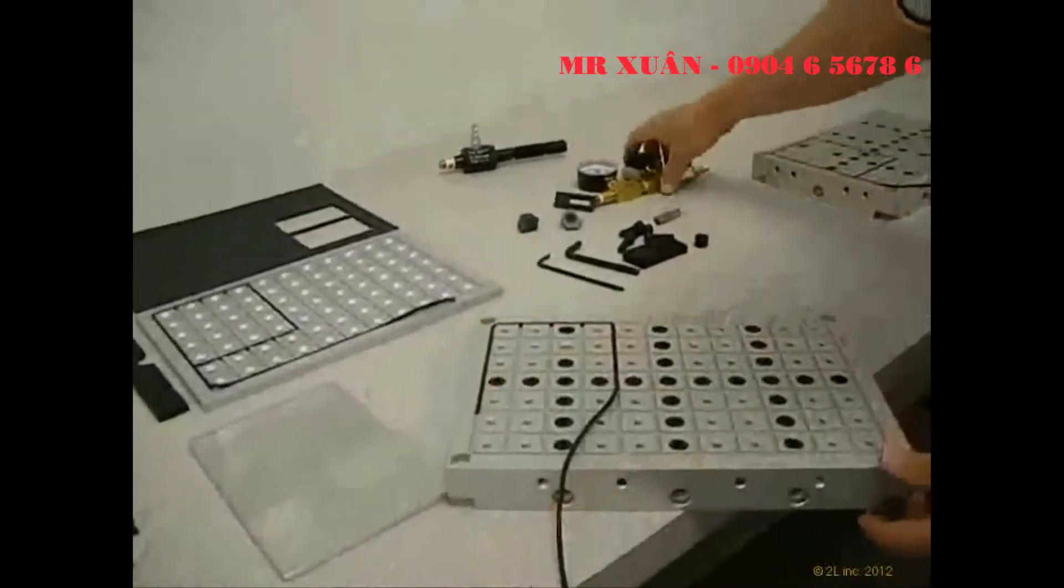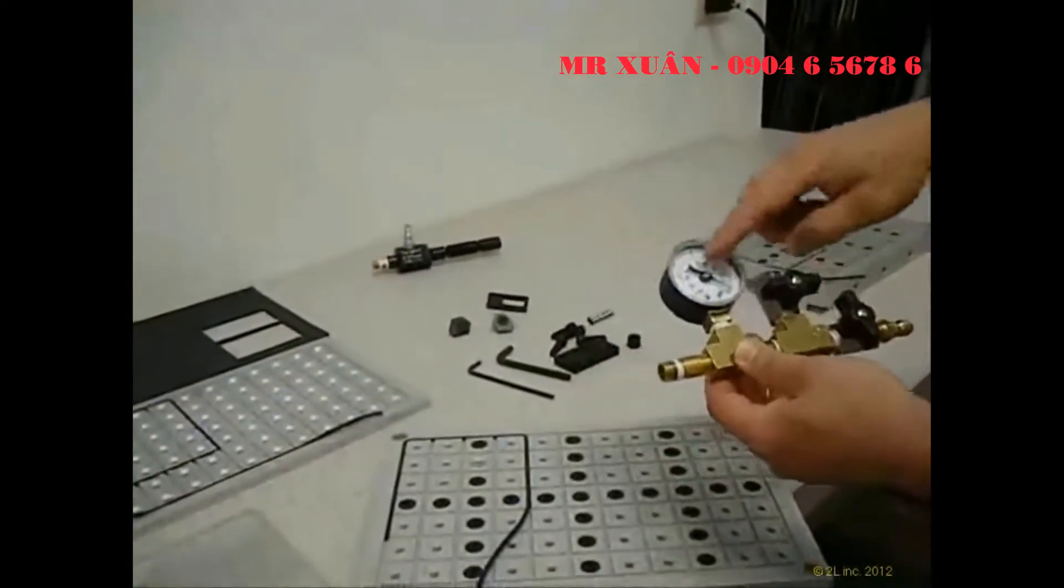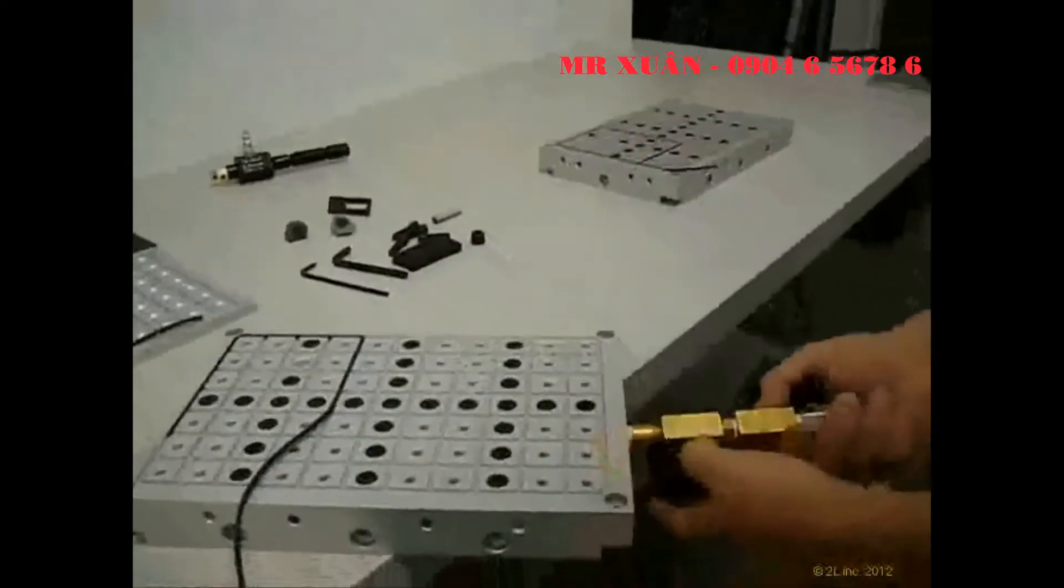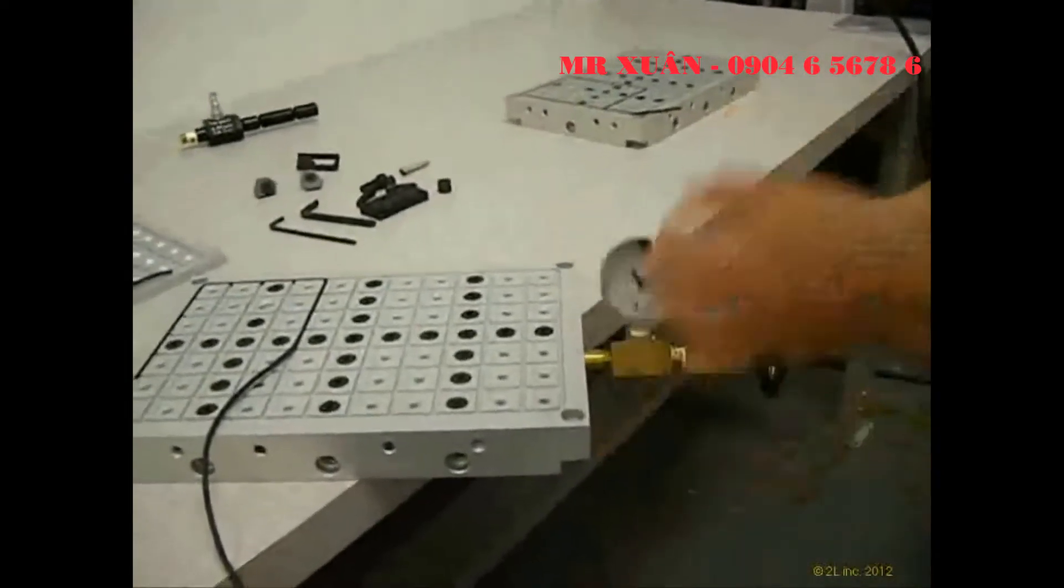I'll screw in the vacuum manifold system now. That's just a simple thing with two valves and a vacuum gauge to let you show that the vacuum system is working. So you just screw that in.